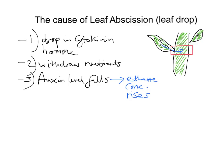When auxin level falls, the ethene concentration rises. Ethene is antagonistic to auxin — it does the opposing, opposite effect.